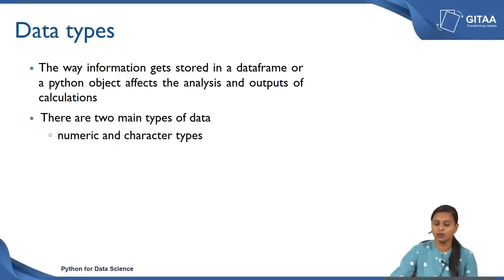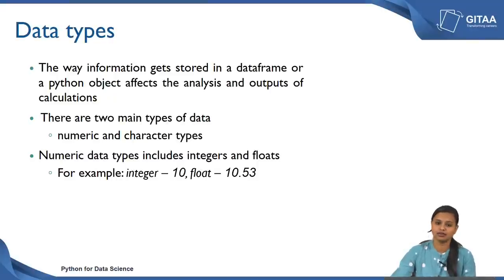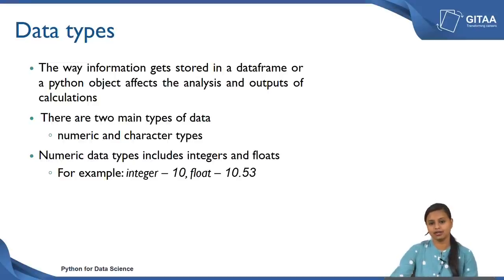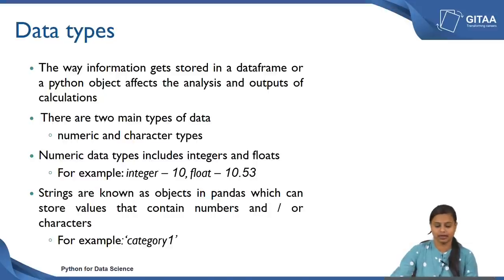Basically there are two main types of data: one is numeric and another is character. Numeric data types include all numerical values in terms of integers and floats. An integer value is represented as 10, and float values are used whenever there is a numerical value with a decimal, for example 10.53.